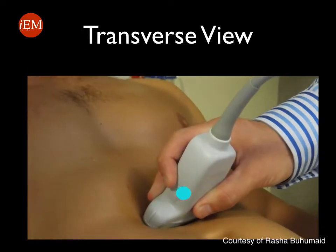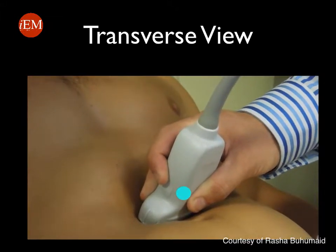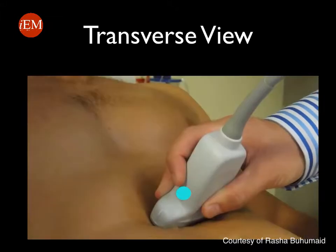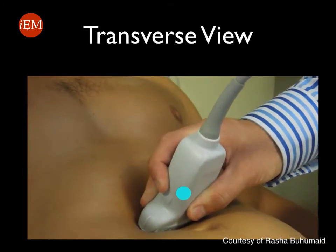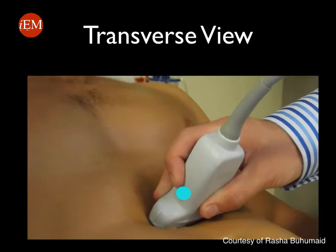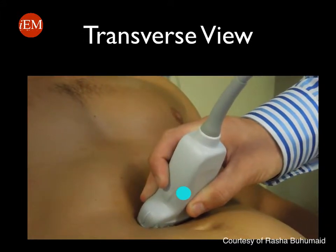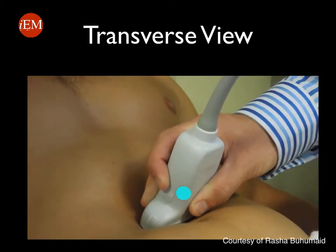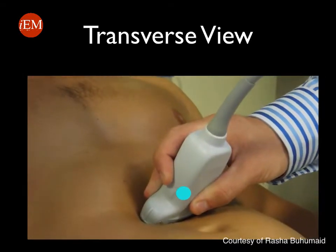You will start at the sub-xiphoid area with your probe in a transverse plane, probe marker towards the patient's right. You will identify the abdominal aorta and slide the probe towards the umbilicus until you visualize the bifurcation of the aorta.